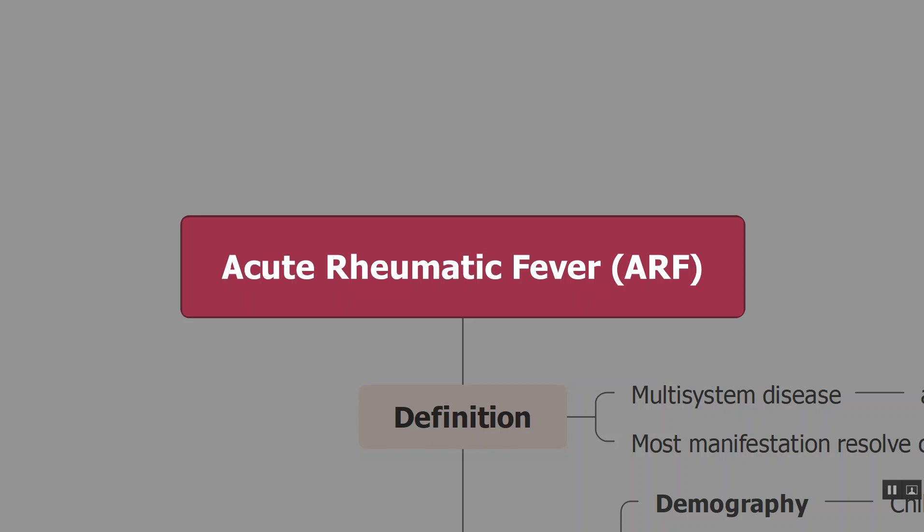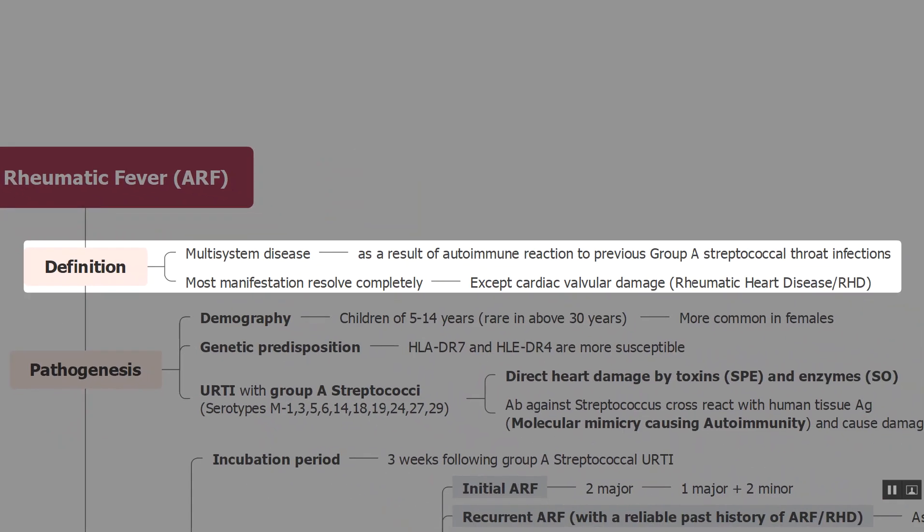Welcome to this session where we will learn about Acute Rheumatic Fever. It is a multi-systemic disorder, meaning it involves more than one organ, and it is a result of an autoimmune reaction to an infection — specifically a throat infection or upper respiratory infection caused by a bacteria known as Group A Streptococci. Most of its manifestations resolve completely, but it may leave cardiac valvular damage, known as Rheumatic Heart Disease.